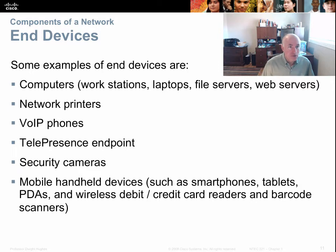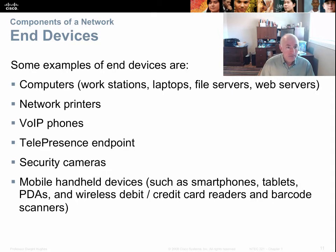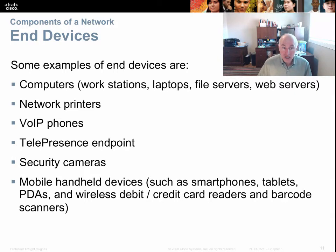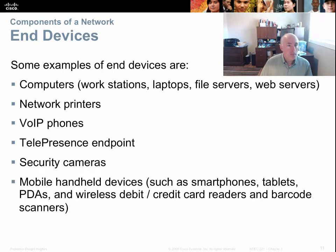Within the devices category, we have different types. One type is called the end device. Examples include computers, network printers, phones, telepresence systems — like that Cisco Conference Center that's at two locations — security cameras, tablets, PDAs, credit card machines, and barcode scanners. There are many types of end devices.